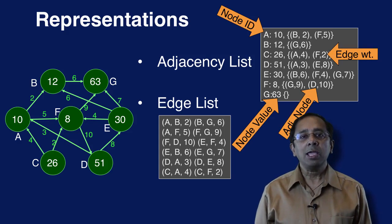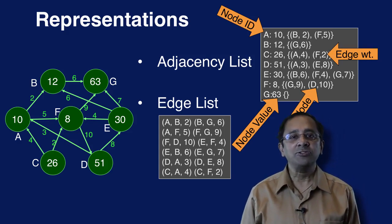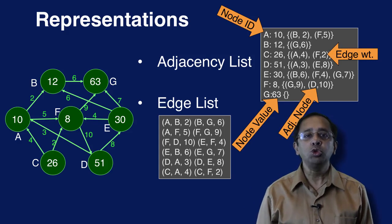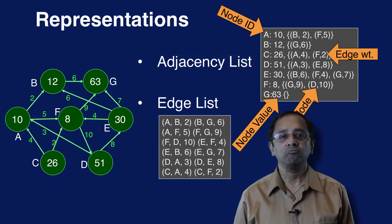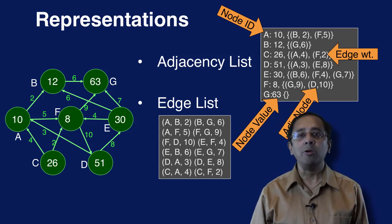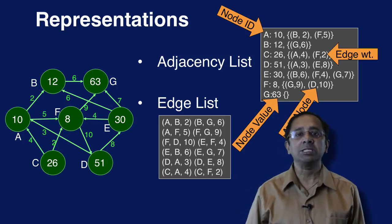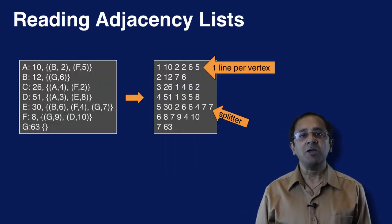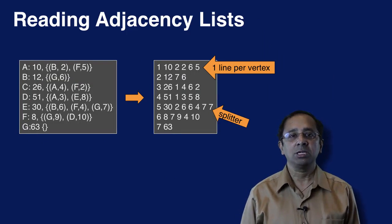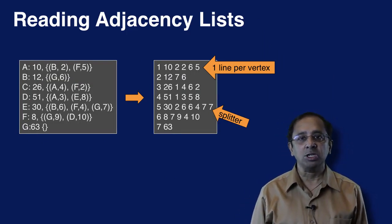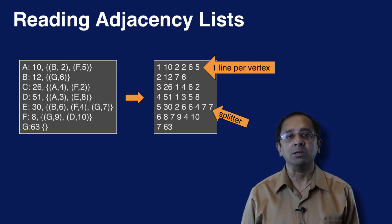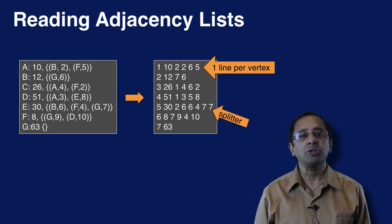Thus, in line 1, A has a value of 10, and two neighbors B and F with edge weights 2 and 5, respectively. Since G has no outgoing edge, the adjacency list is empty. The current way of representing graphs is in terms of triplets, containing the source and destination nodes, followed by an edge weight. Notice the way that we have shown it here, and the node value is not represented.